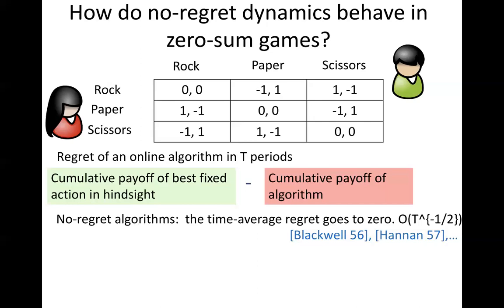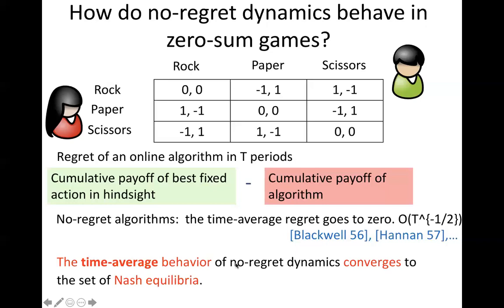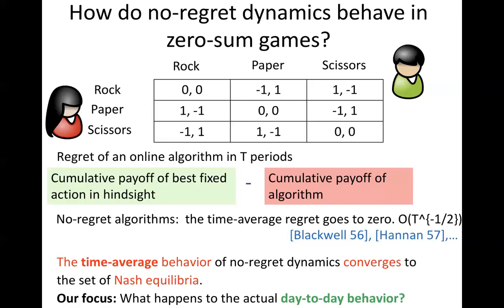I want the time average of this ratio to go to zero — equivalently, I want this difference to grow sublinearly with time. By classical work from Blackwell and Hannan in the 1950s, there exist simple algorithms whose time-average regret does go to zero. These no-regret algorithms are important for zero-sum games because the time-average behavior of any pair of no-regret dynamics converges to the set of Nash equilibria. But we are interested not in time-average behavior but in the day-to-day behavior — does it converge to the uniform distribution in rock-paper-scissors, or does it cycle?